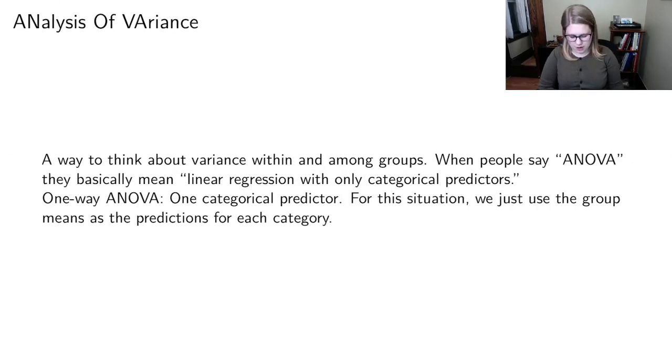So ANOVA stands for analysis of variance and it's basically a way to think about variance within a group versus variance among a group and when people say ANOVA what they really mean is linear regression that only uses categorical predictors.